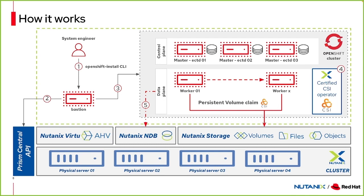Thank you, Fabrice. Focusing on the OpenShift deployment on Nutanix stack: we use a VM Bastion. On this Bastion, we installed the OpenShift install CLI. This CLI communicates directly with the Prism Central API to automatically deploy the OpenShift cluster — deploying the control plane and the data plane with different VMs. In Day 2 operations, we deploy the certified CSI operator from Nutanix to consume directly and transparently, from the OpenShift cluster, the storage provided by the Nutanix stack.